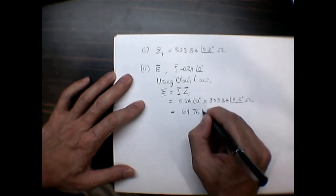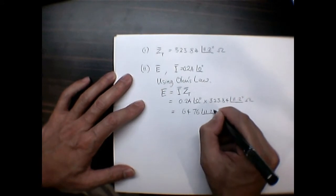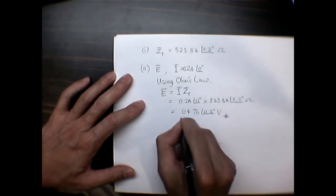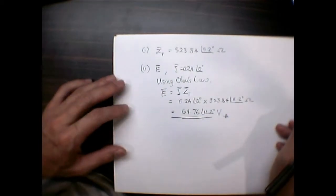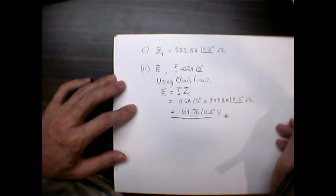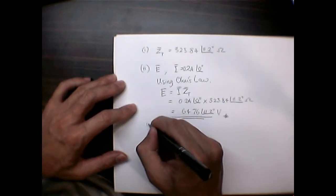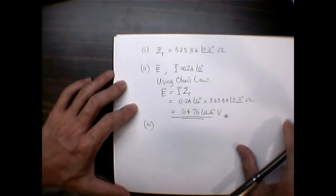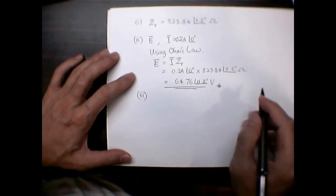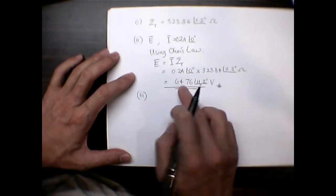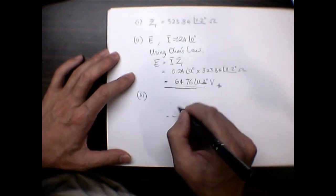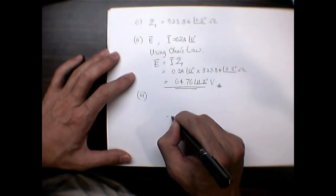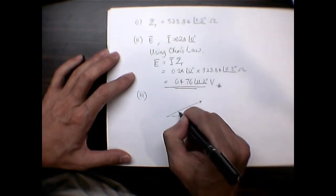And finally we want to find the power factor. Now power factor, it will be very useful to draw a phasor diagram. In this case, we have E at an angle of 11.2 degrees, so E will be something like this.